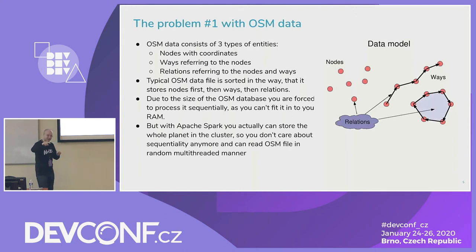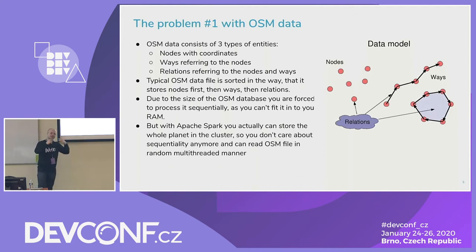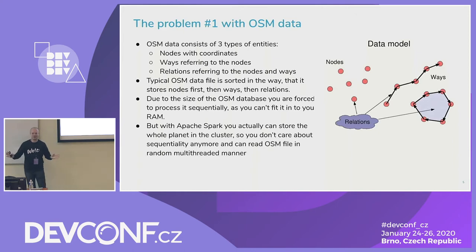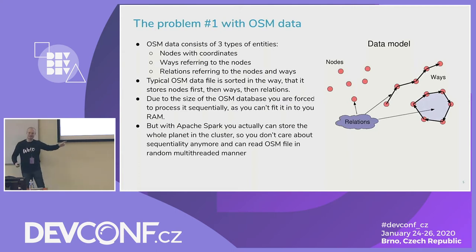Relations may refer to another relation which can appear before or after in the file — you never know. But the biggest problem is that sequential access to the file — you have to read it in order — means single-threaded processing, just a single process. Now imagine you have a Spark cluster of 12 nodes, 10 cores each, 120 cores. Doing what? Waiting for a single core to read 1.2 terabytes of data. That's a waste of resources.